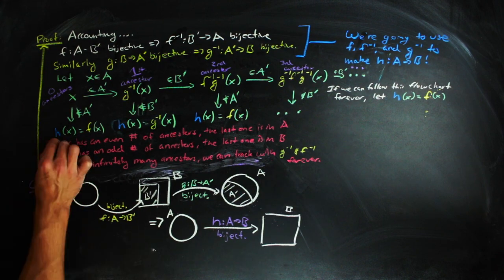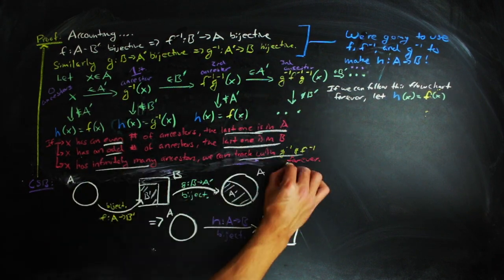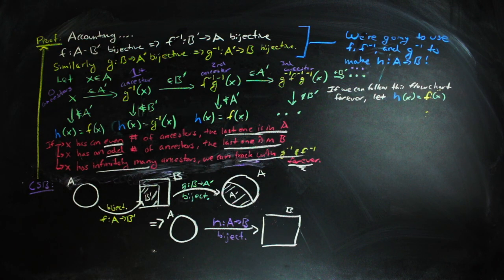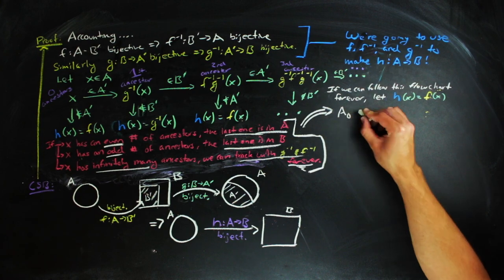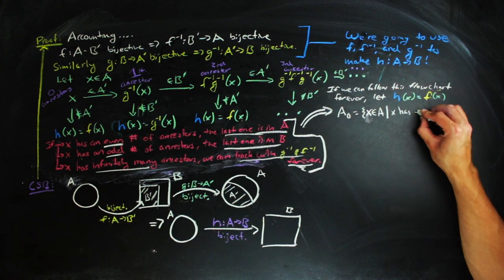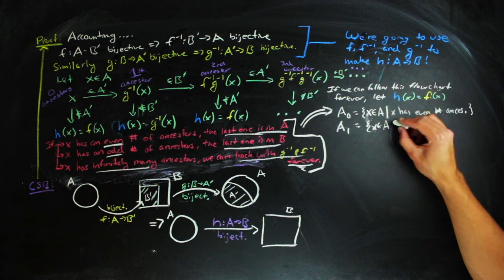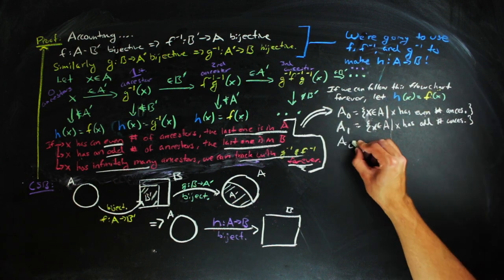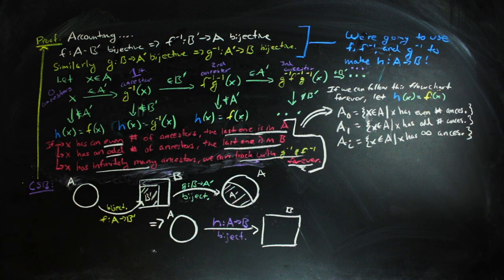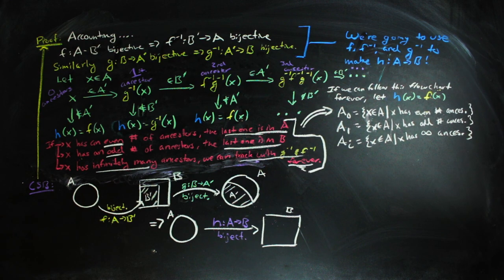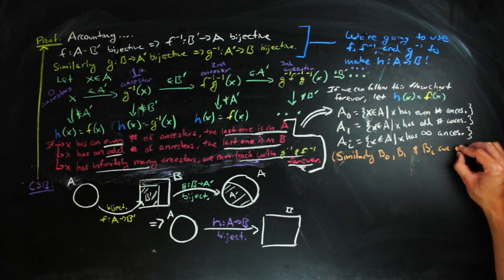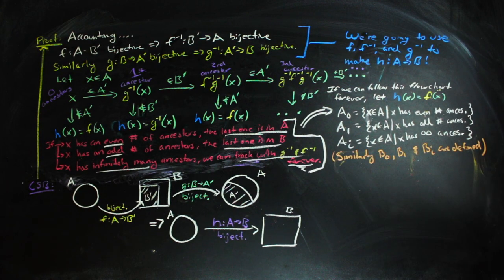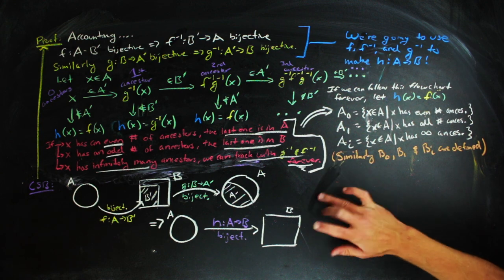Now, by looking at ancestors, we can partition A and B into different subsets by their ancestor designations. So A sub 0 denotes an element of A that has an even number of ancestors. Similarly, A sub 1 denotes an element of A that has an odd number of ancestors, A sub i denotes an element of A that has infinitely many ancestors. We can define B sub i, B sub 0, and B sub 1 in a similar fashion.